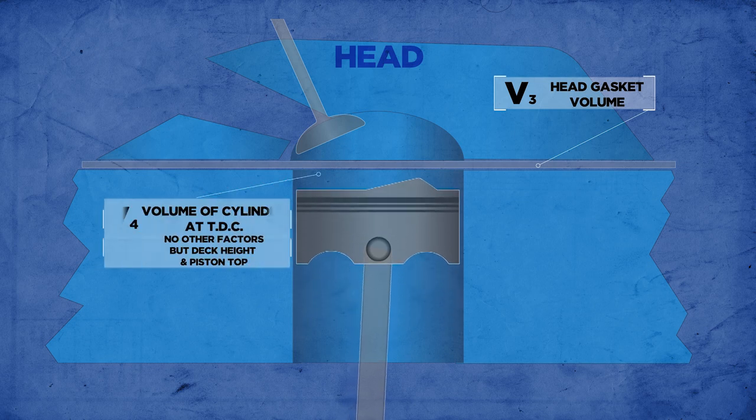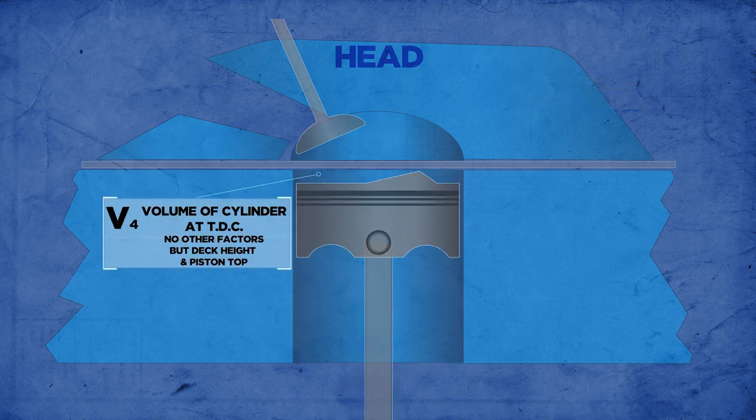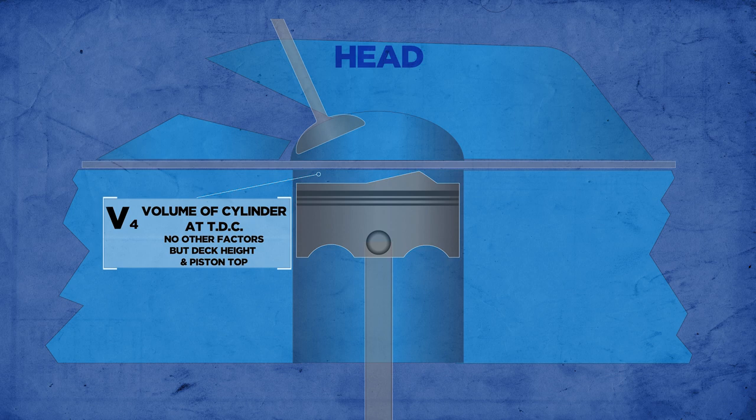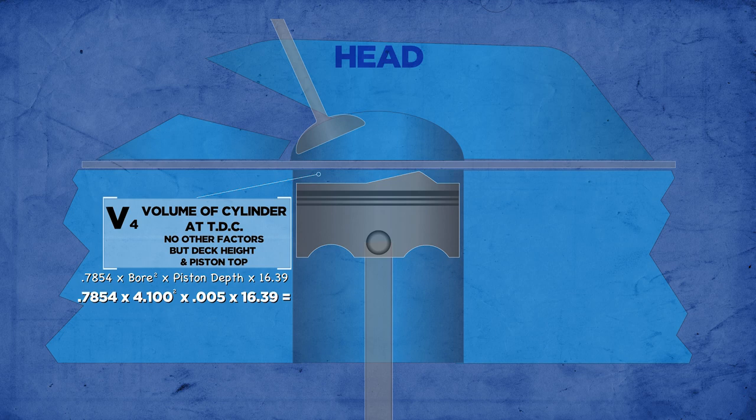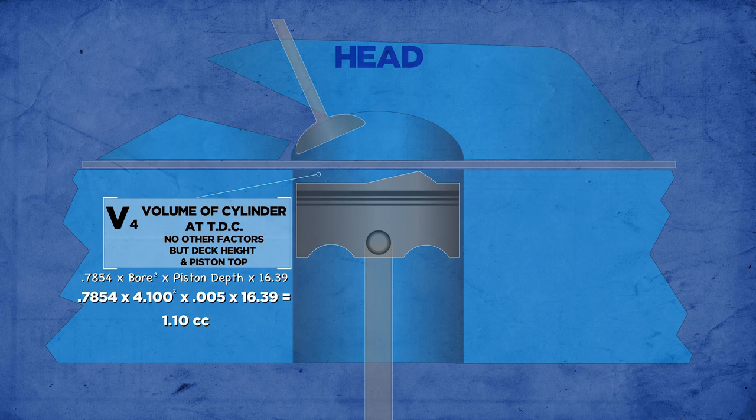The fourth measurement is cylinder volume at TDC. This measurement assumes a perfectly flat piston with no dome or dish. The LS we used has a piston depth of five thousandths in the hole and we'll plug that number into our volume equation. The result is 1.10 cc's.